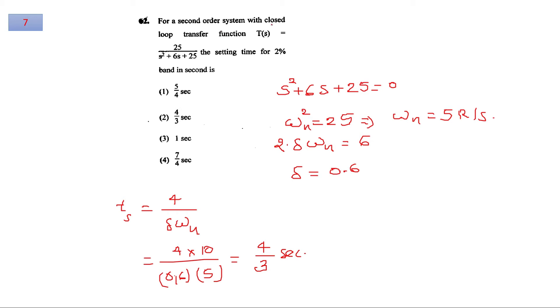For question number 7, for a second order system with closed loop transfer function given, we need the settling time for 2% band. This 2% is a tolerance band. For a second order system given a unit step input, it exhibits this kind of response and this time is known as the settling time or setting time. For the 2% tolerance band, the value of time is 4 over zeta omega n. By comparing with the standard equation from the characteristic equation obtained by comparing the denominator term to 0, you can find the value of natural frequency and damping ratio as 0.6 and 5 radian per second. By putting these values in TS equals 4 over zeta omega n, you will get the value of settling time equals to 4 by 3.